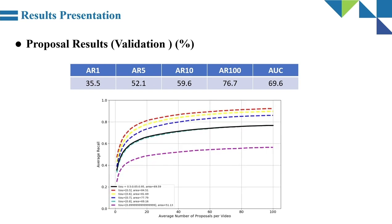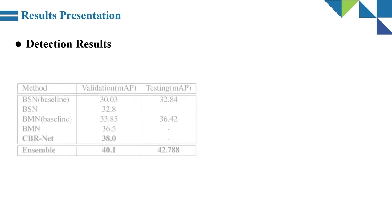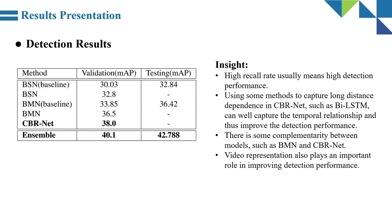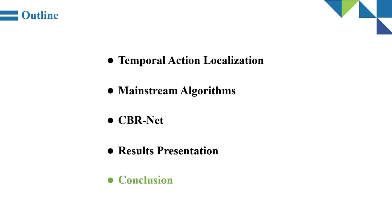Below is the AUC schematic diagram. Combining the results of proposal and detection, we can observe: first, high recall rate usually means high detection performance; second, using methods to capture long-distance dependencies in CBRNet, such as BiLSTM, can well capture the temporal relationship and improve detection performance; third, there is complementarity between modules such as BMN and CBRNet; fourth, video representation also plays an important role in improving detection performance.